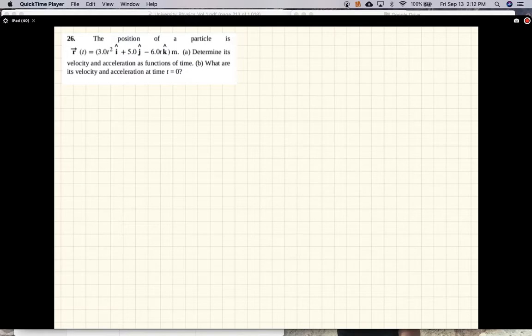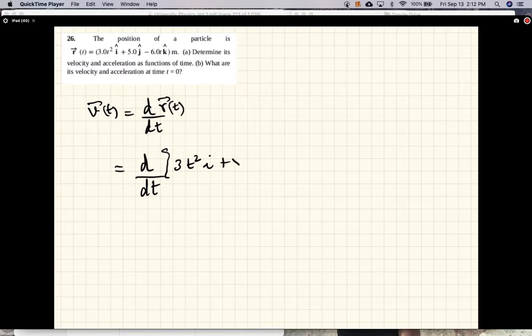Velocity is given by the time derivative of position. We are going to take the derivative of this function, 3t squared i plus 5j minus 6tk.